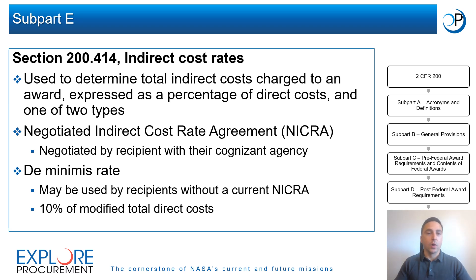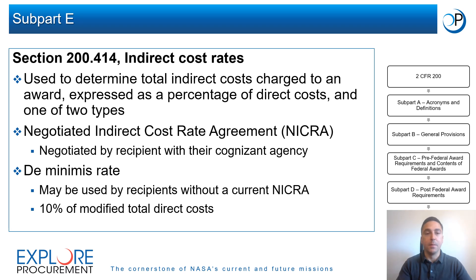The total amount of indirect costs charged to an award is determined by an indirect cost rate, expressed as a percentage of direct cost rates. Recipients can use one of two types: a Negotiated Indirect Cost Rate Agreement, or NICRA, negotiated with their cognizant agency — which all federal agencies must accept — or the de minimis rate of 10% of modified total direct costs, available to recipients who do not have a current NICRA and requiring no supporting documentation.